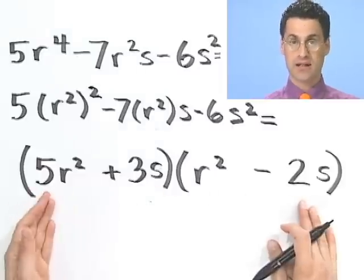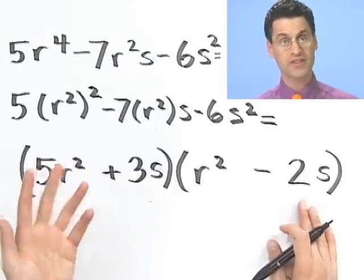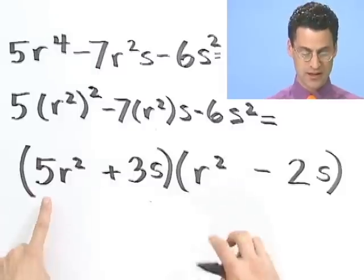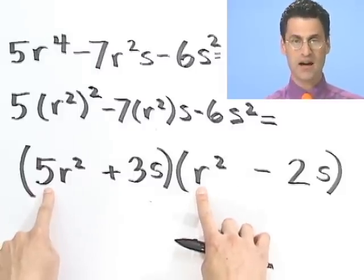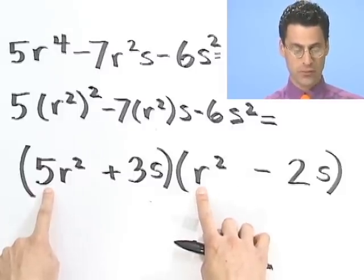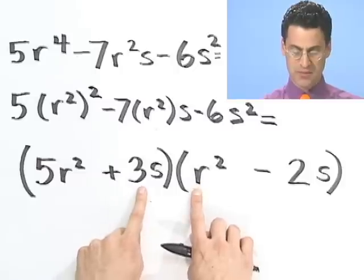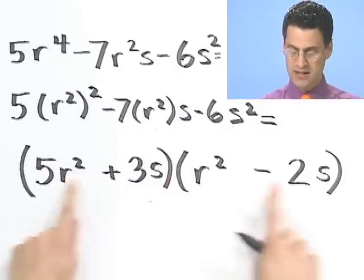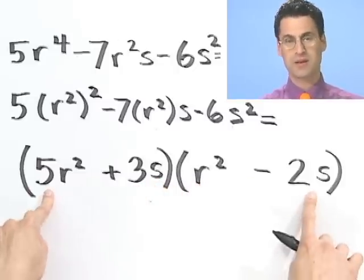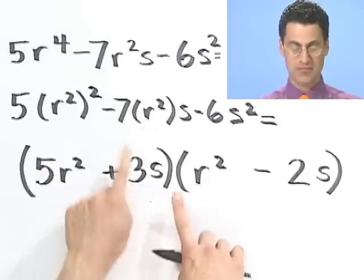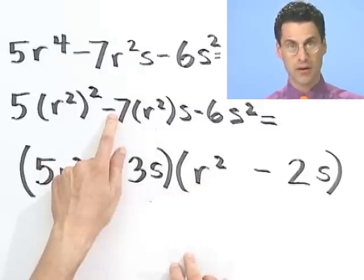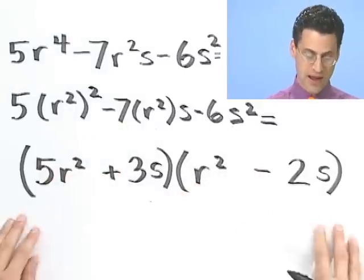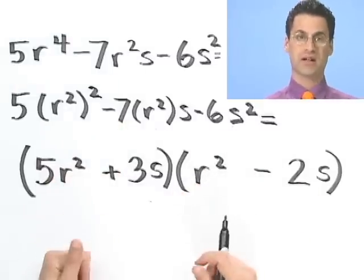A really great thing to do is check your answer. Foiling: first times first is 5r to the 4th — perfect. Inside term gives plus 3r squared s, outside term gives minus 10r squared s, they combine to minus 7r squared s. Last times last is minus 6s squared, as we'd hoped. So this is factored correctly.